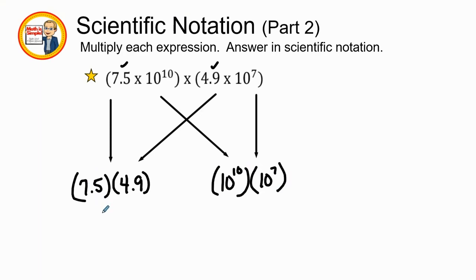So 7.5 times 4.9 is 36.75 times 10 to the 17th power. Once again, I move my decimal over because 36 is greater than 10. Now 3.675 definitely falls in between greater than 1 and less than 10. When I move it over once to make it smaller, I make my exponent larger by 1. And that's 10 to the 18th power.